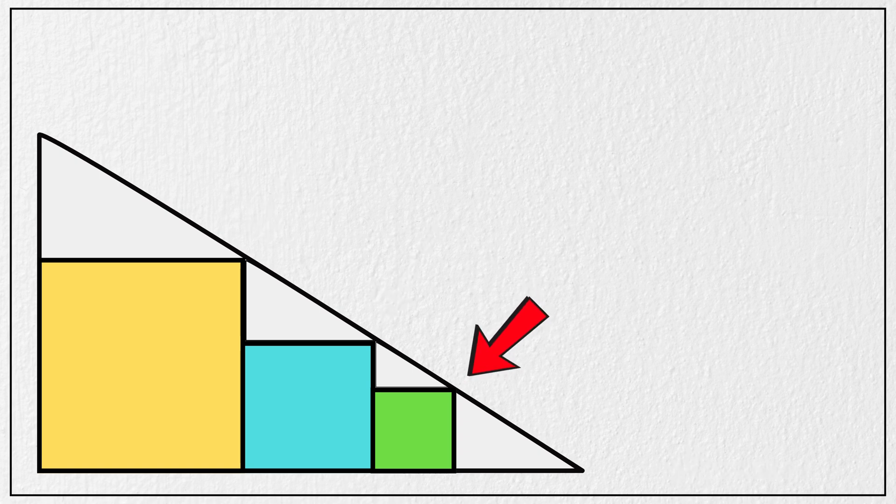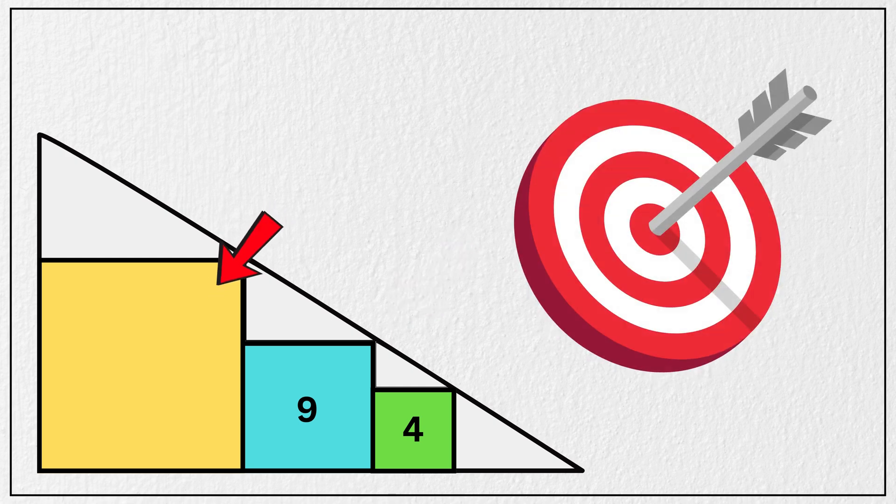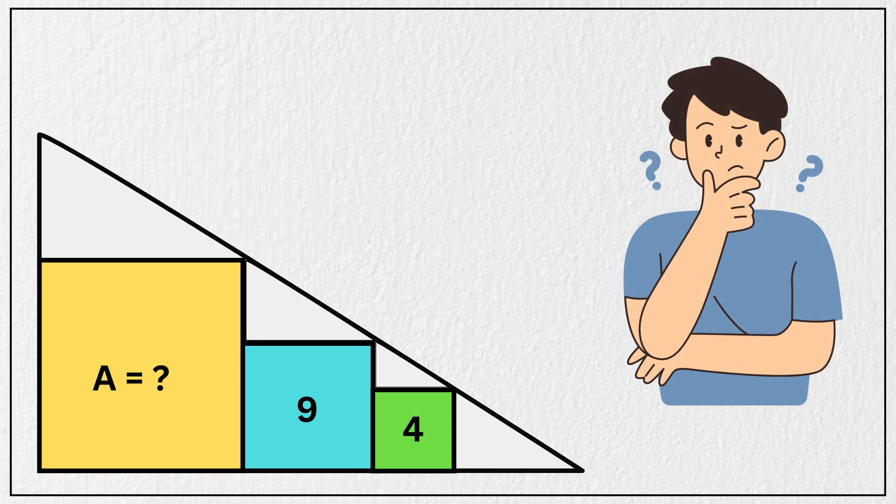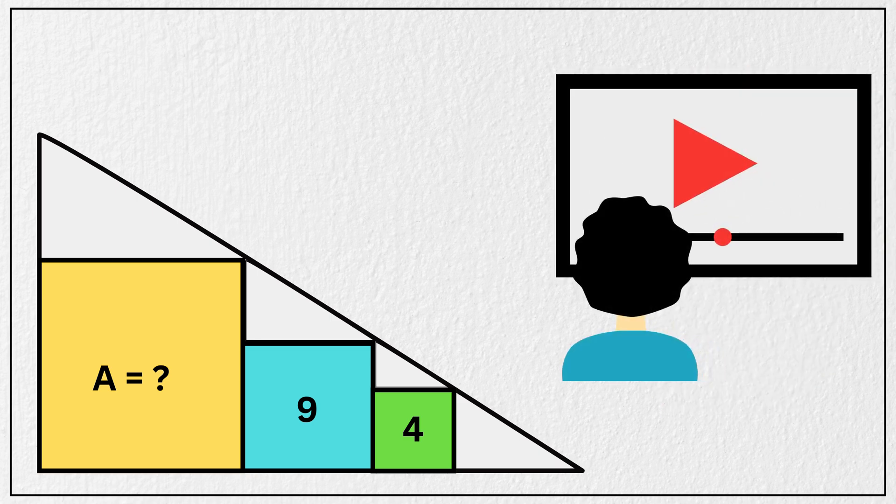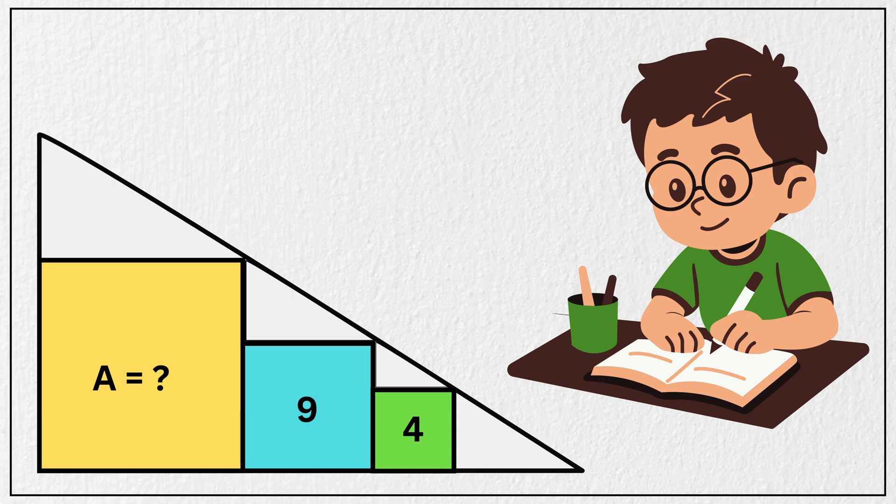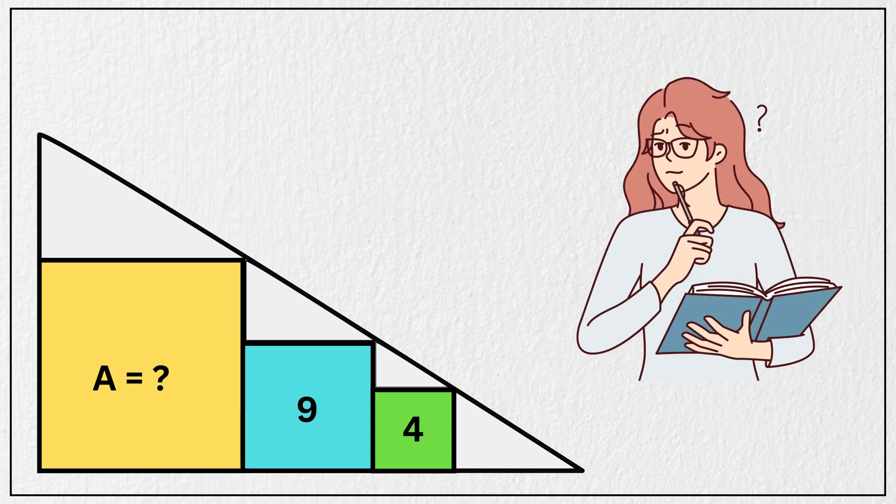Area of this small green square is 4 square units. Next to it there is a blue square, whose area is 9 square units. And our goal is to find the area of this large yellow square. Take a moment to think about it. Pause the video if you want to try solving it on your own, and then come back to check your answer.